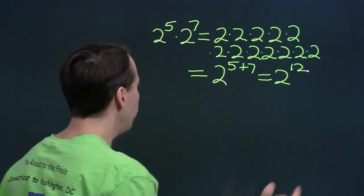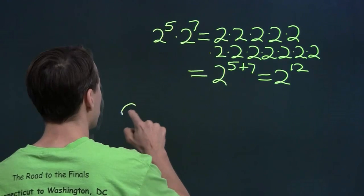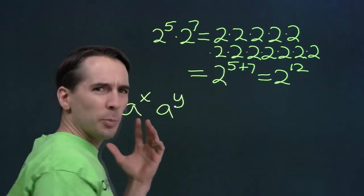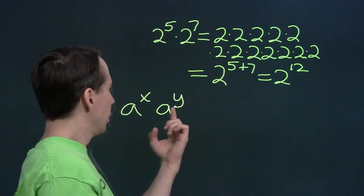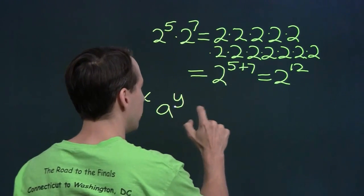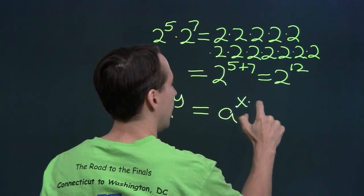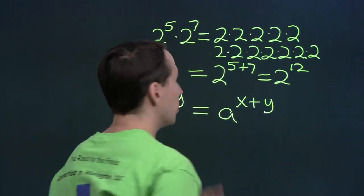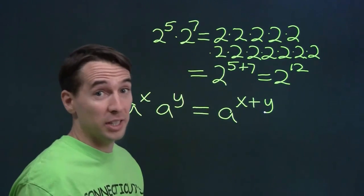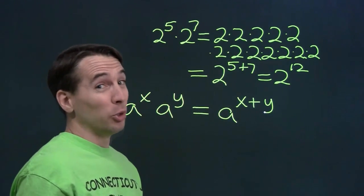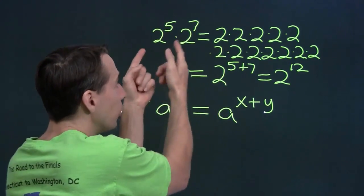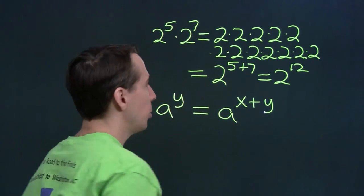There's nothing special about two, five, and seven here. If I start with a to the x times a to the y, that's the product of x a's and y a's. So if I take x a's and put them together with y a's, I get a total of x plus y a's. Now it's important that the bases are the same. If I had two to the fifth times three to the seventh, I'd just have to multiply that out or get a calculator. But when the bases are the same and I'm multiplying, I can just add the exponents.